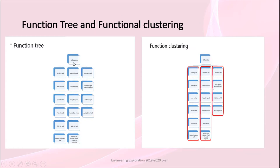Here comes our function tree. The ball launcher has three subsystems: handling unit, launching unit, and indication unit. In the handling unit we have functions such as hold the ball, sense the ball, push the ball, grip the ball, and detect the size of the ball. In the launching unit we have launch the ball, vary the speed, one ball at a time, spin the ball, and restrict the number of balls. In the indication unit we have blink the light when the ball is entered and machine on and off.